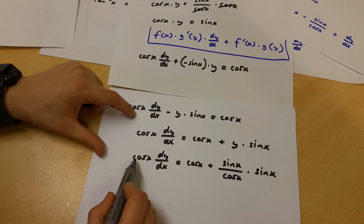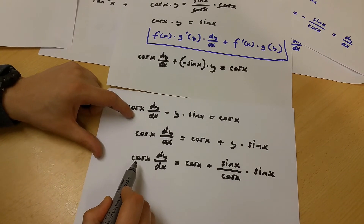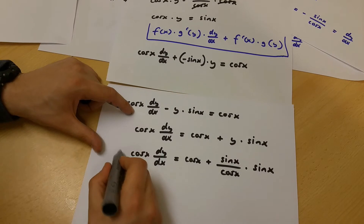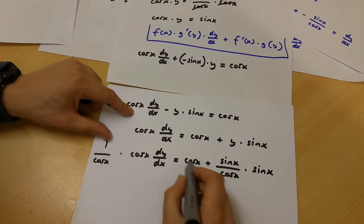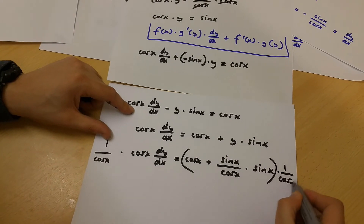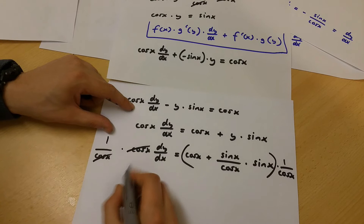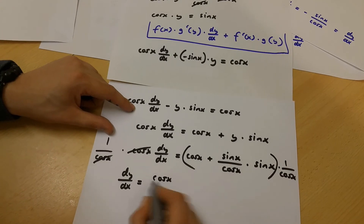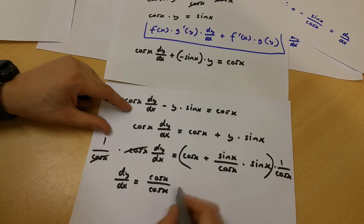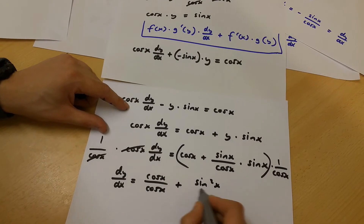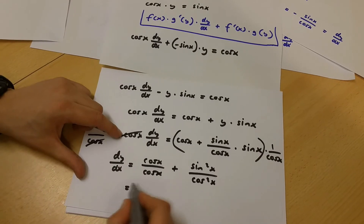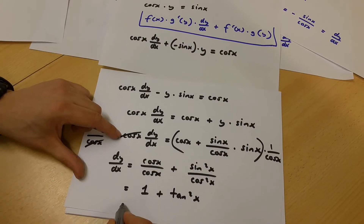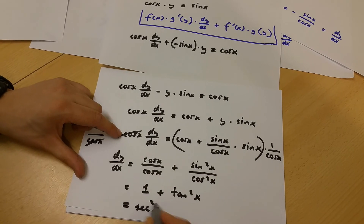I am going to multiply both sides of this equation by 1 over cos x. If I do this, I'm going to get dy/dx is equal to cos x over cos x plus sin x squared over cos x squared. And this is equal to 1 plus tan x squared.